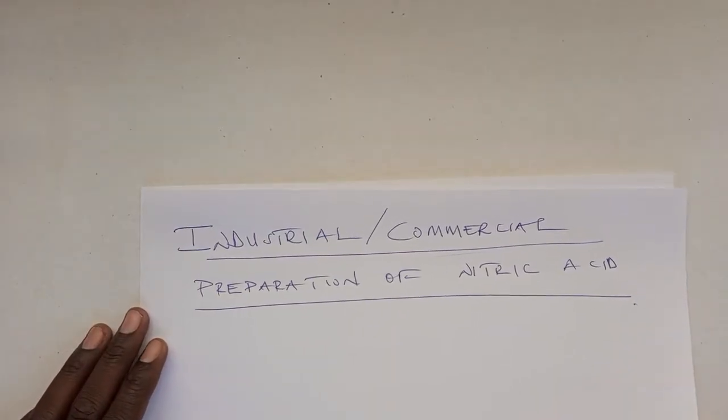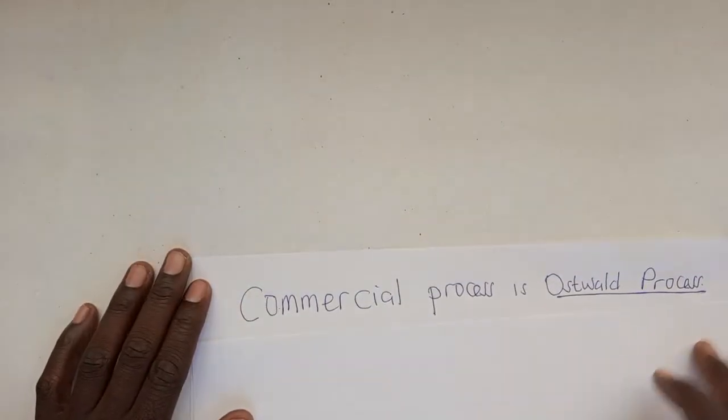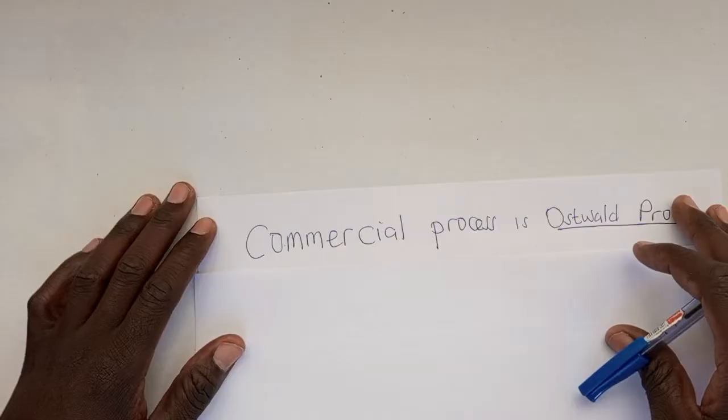Let's get started. The first thing that we need to know is that the industrial preparation of nitric acid, the name of the process is called the Ostwald Process.